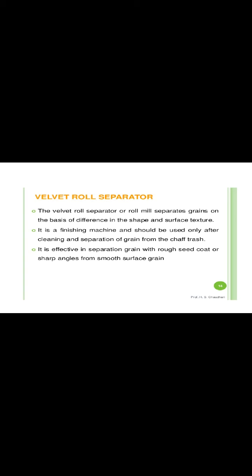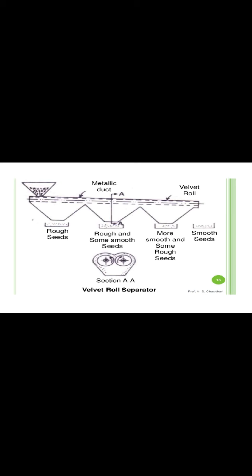The velvet roll separator separates grains on the basis of differences in shape and surface texture, similar to the inclined belt. It is a finishing machine and should be used only after cleaning and separating grain from chaff. It separates rough seed or seeds with sharp angles from smooth surface grains. It consists of two rollers with a velvet cover, with a steel plate provided over the rollers. Smooth seeds are not affected by the velvet rolls and fall to the downward side, while rough seeds bounce on the rollers and strike the steel plate.